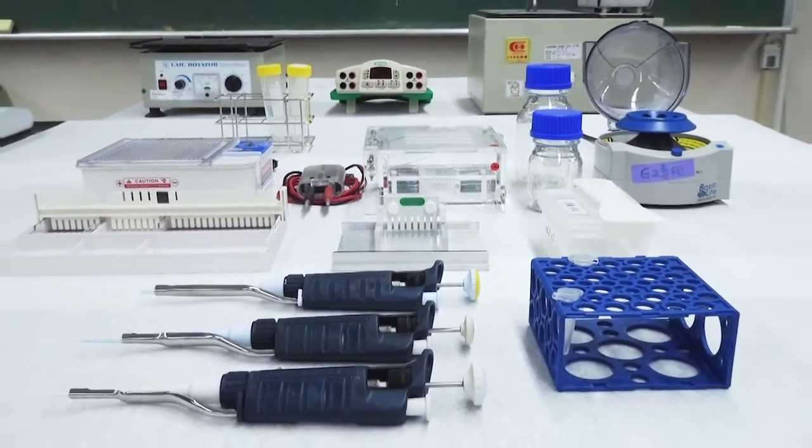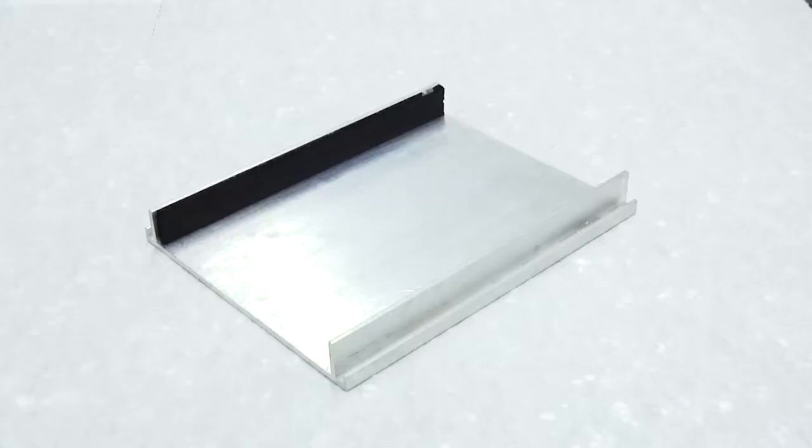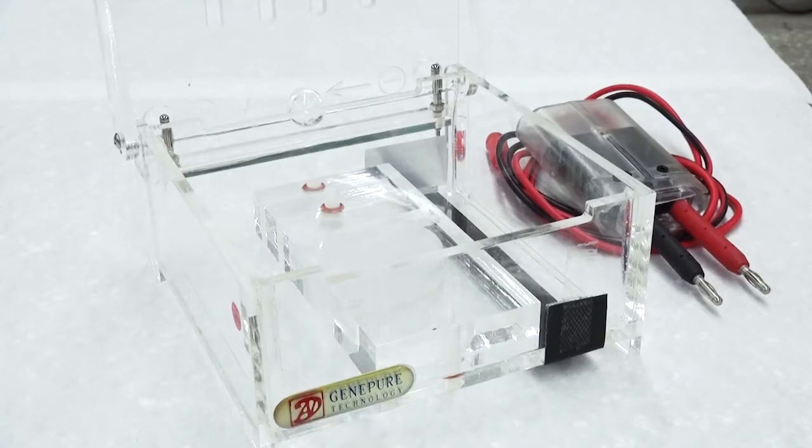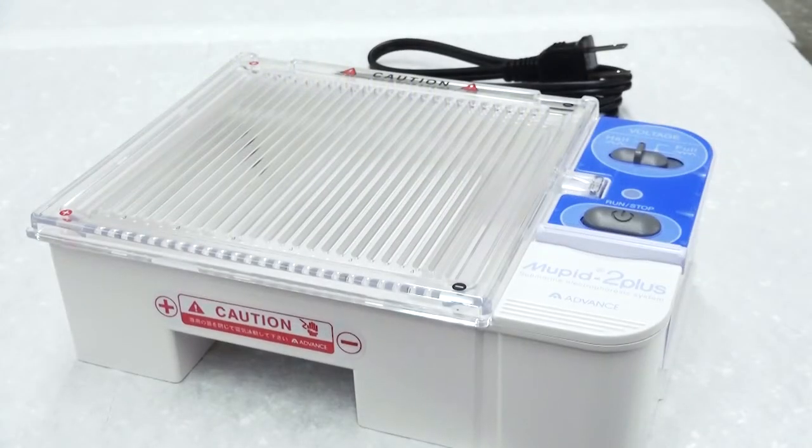In addition to general lab equipment, we need a gel tray, comb, casting plate, and tank with electrodes. You can also use a system with fixed length cones like this.